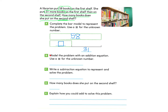Now let's look at part B: model the problem with an addition equation. Use a square for the unknown number. We know the total on the top shelf is 58. The first shelf has 58, which is the total of the unknown plus the books put on the second shelf. So we take the books on the second shelf, which is 31, plus the unknown to make an addition equation.